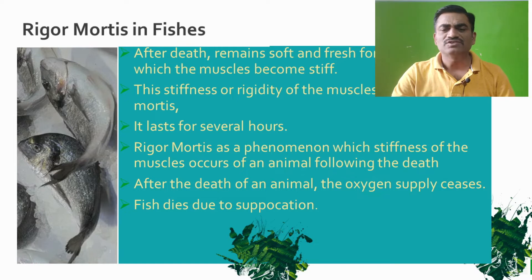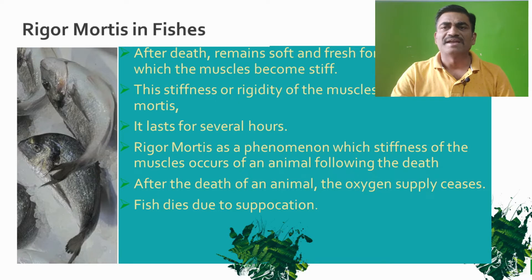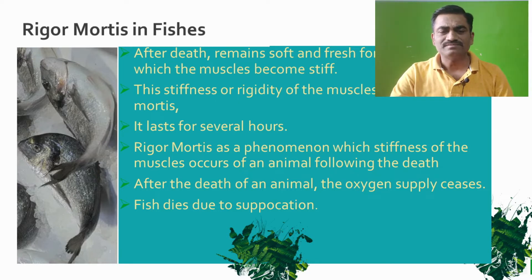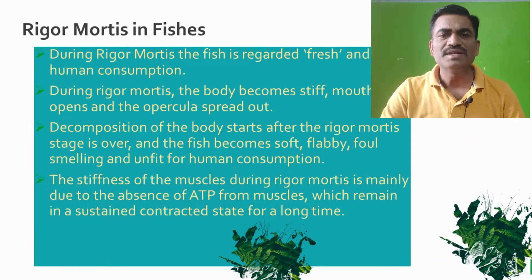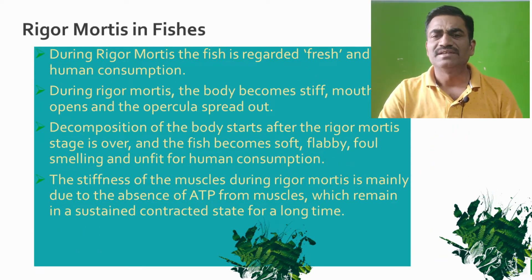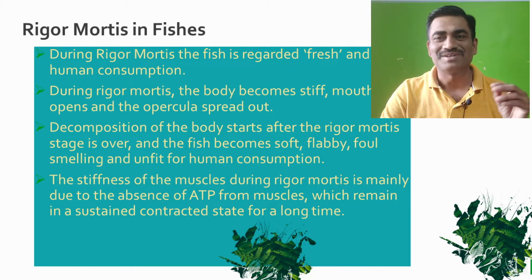After the death of the animal, the oxygen supply to the body ceases and the fish dies due to suffocation. The main reason for the fish dying after catching is suffocation due to the oxygen supply ceasing. During rigor mortis, the fish is regarded as fresh and fit for human consumption.